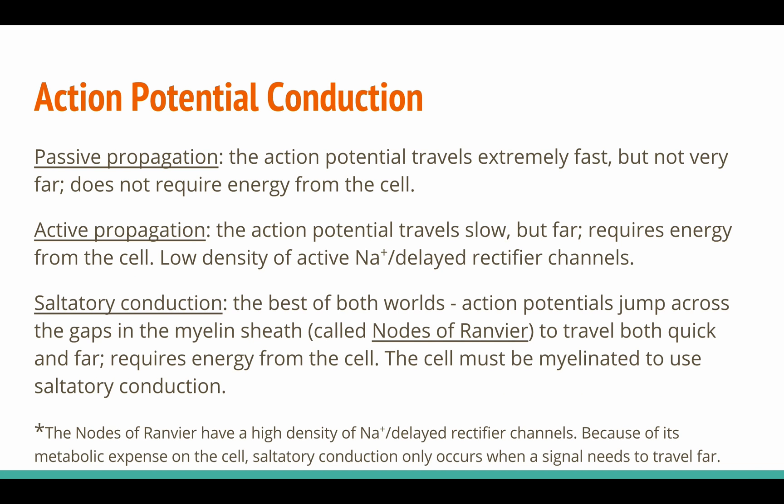Let's look at some of the ways action potentials travel across the length of the axon. Passive propagation results in an extremely fast action potential that doesn't travel very far and requires no energy from the cell. Active propagation is when the action potential travels slowly but far; it requires energy and only occurs with unmyelinated axons, which have a low density of active sodium ion and delayed rectifier channels.